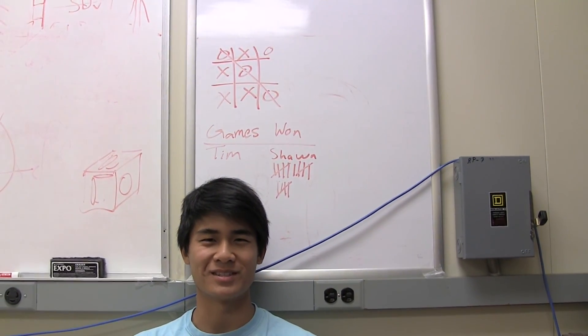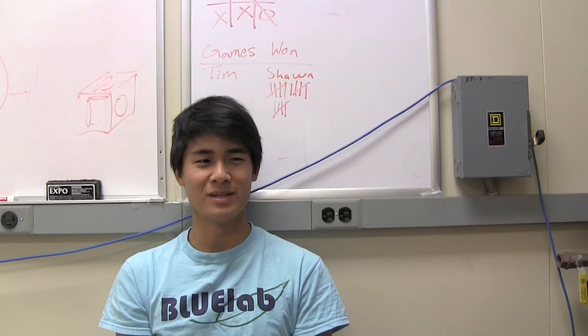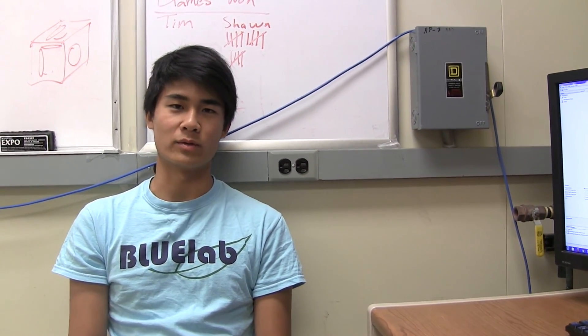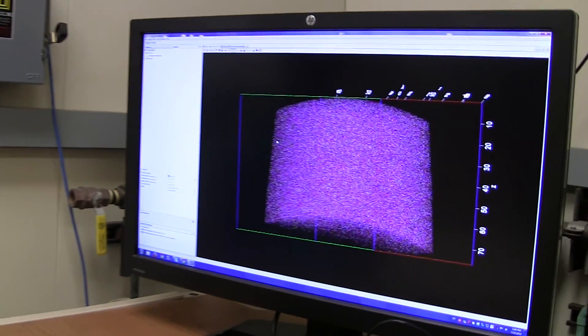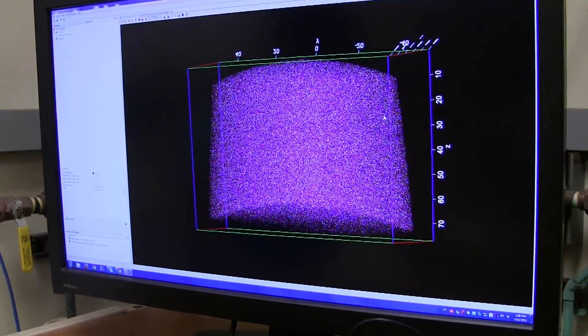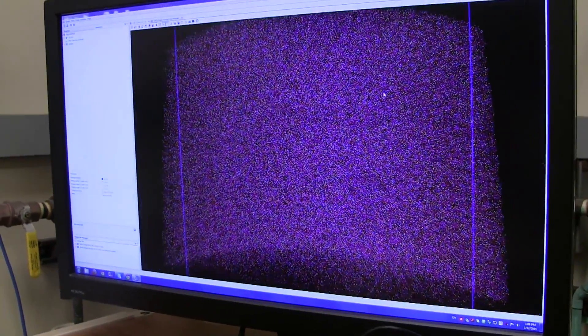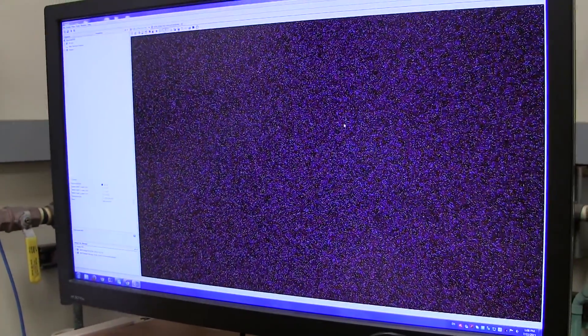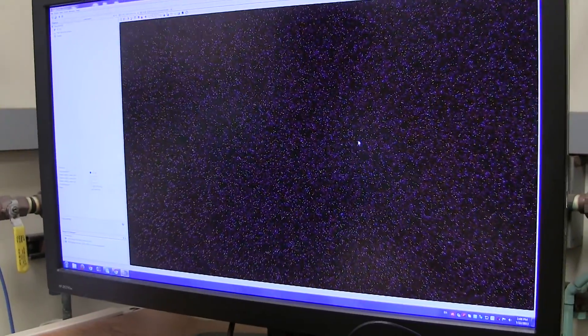Once we've gathered our data from the atom probe, we can use that data, specifically the time of flight information, the mass to charge ratio information, and go back to the computer and do essentially a reconstruction using that data to put together what we have created through the metal tip. So here, you can see a reconstruction that we've done. And essentially, this is what a computer model of our metal tip looks like. And as you can see, every single one of these little dots represents an individual atom.